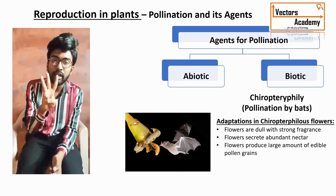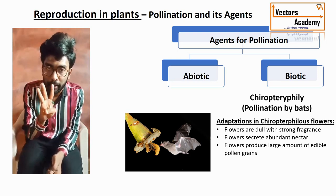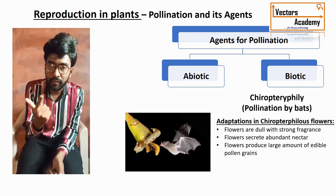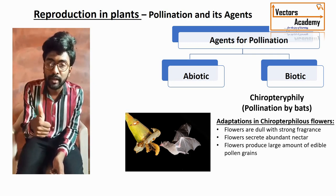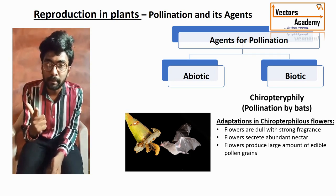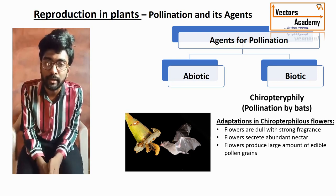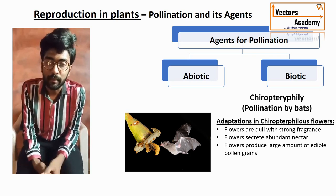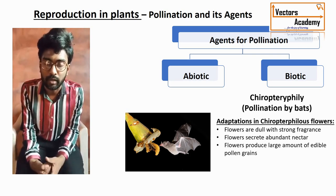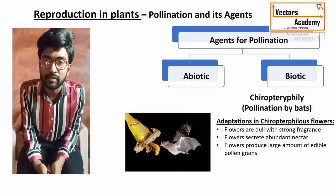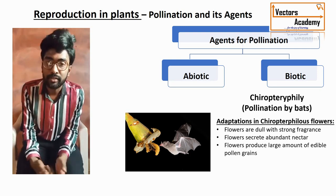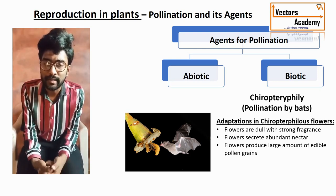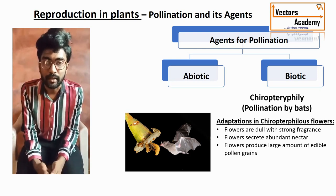The three important biotic agencies for pollination are: entomophily — taking place with the help of insects; ornithophily — with the help of birds; and chiropterophily — with the help of bats. One more is malacophily — pollination that takes place with the help of snails, which are generally seen in the rainy season. The best example is Chrysanthemum.